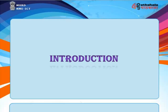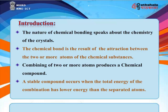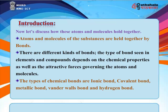The nature of chemical bonding speaks about the chemistry of the crystals. A chemical bond is the result of the attraction between two or more atoms of a chemical substance. Combining two or more atoms produces a chemical compound. A stable compound occurs when the total energy of the combination is lower than that of the separated atoms. Atoms and molecules of substances are held together by bonds, and the type of bond depends on the chemical properties as well as the attractive forces governing the atoms and molecules.